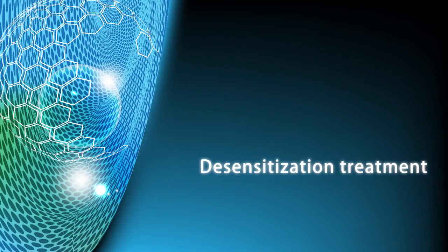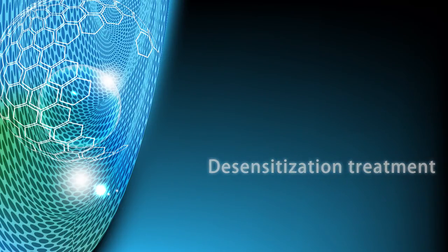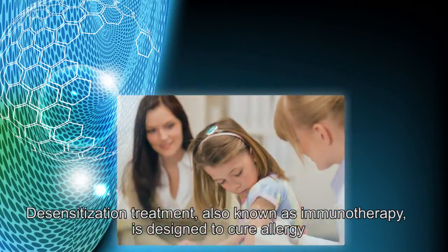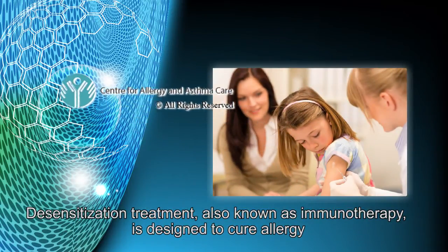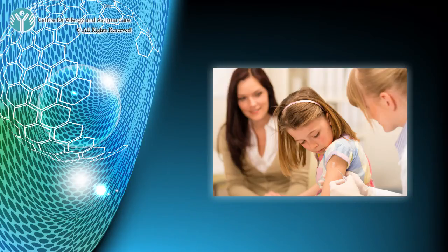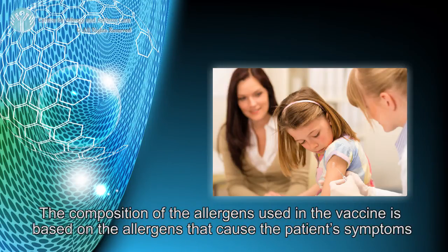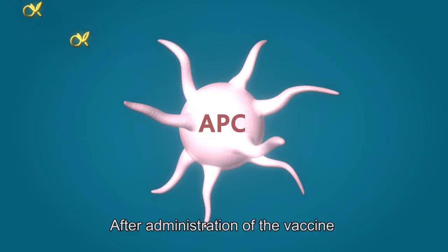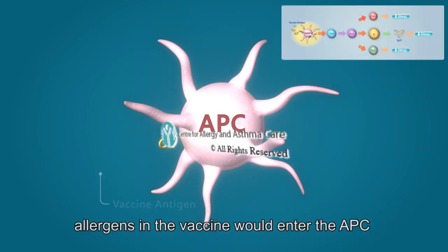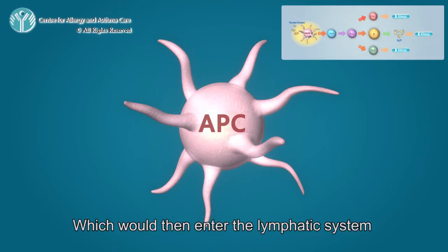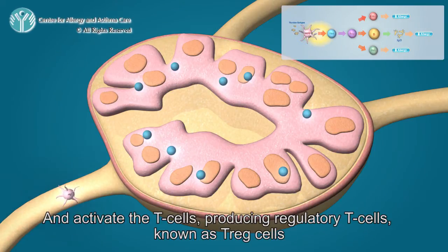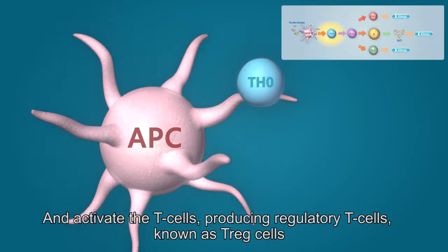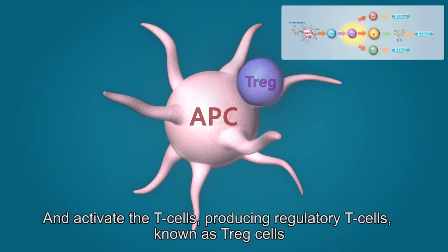Desensitization treatment, also known as immunotherapy, is designed to cure allergy. The composition of the allergens used in the vaccine is based on the allergens that cause the patient's symptoms. After administration of the vaccine, the allergens in the vaccine would enter the APC, which would then enter the lymphatic system and activate the T cells, producing regulatory T cells known as Treg cells.